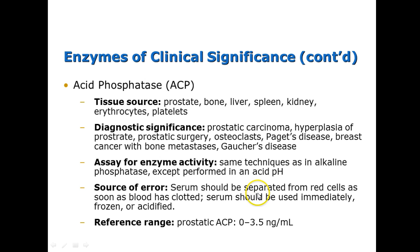Acid phosphatase (ACP) has tissue sources including the prostate, bone, liver, spleen, kidney, erythrocytes, and platelets. Its diagnostic significance is primarily prostate cancer, but also hyperplasia of the prostate, prostate surgery, osteoclast activity, and Paget's disease — so it can be somewhat bone-related as well. The reference range is 0 to 3.5 nanograms per mL, so it is found in very small amounts.